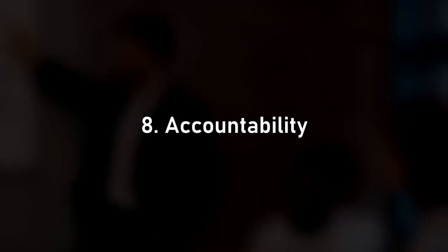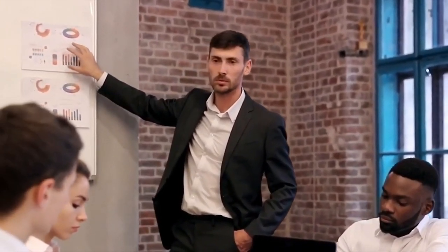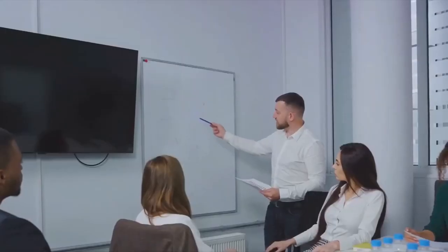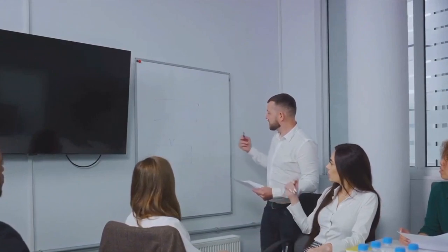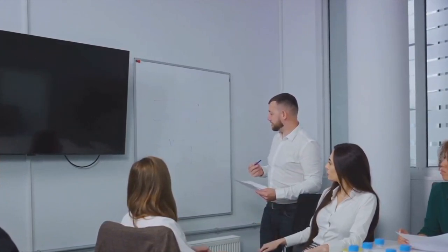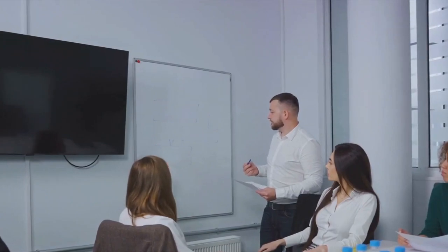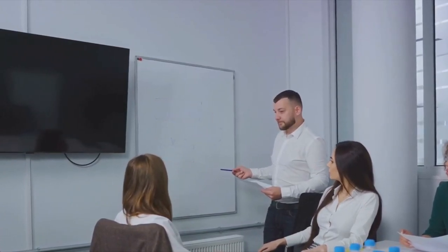Moving on to principle number eight, accountability. A leader must be accountable. This means taking responsibility for the outcomes of their decisions, both good and bad. It's about standing up and saying, I made this decision and I own the results. Accountability creates trust and respect. When a leader is accountable, it sets the tone for the entire team. Team members feel more secure knowing that their leader won't pass the blame, but will stand up and take responsibility. This fosters a culture of ownership and responsibility within the team, driving everyone to perform at their best.